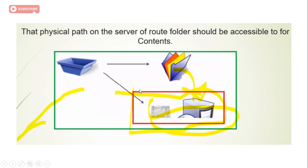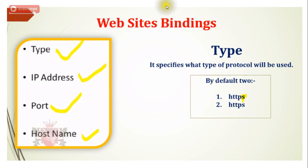Also, the physical path or root folder should be accessible for contents — meaning the hard drive or drive where we are keeping the website should be accessible. Now, for website binding, there are four different mechanisms we can use: type, IP address, port, and host name. I will show all of these one by one in coming videos.